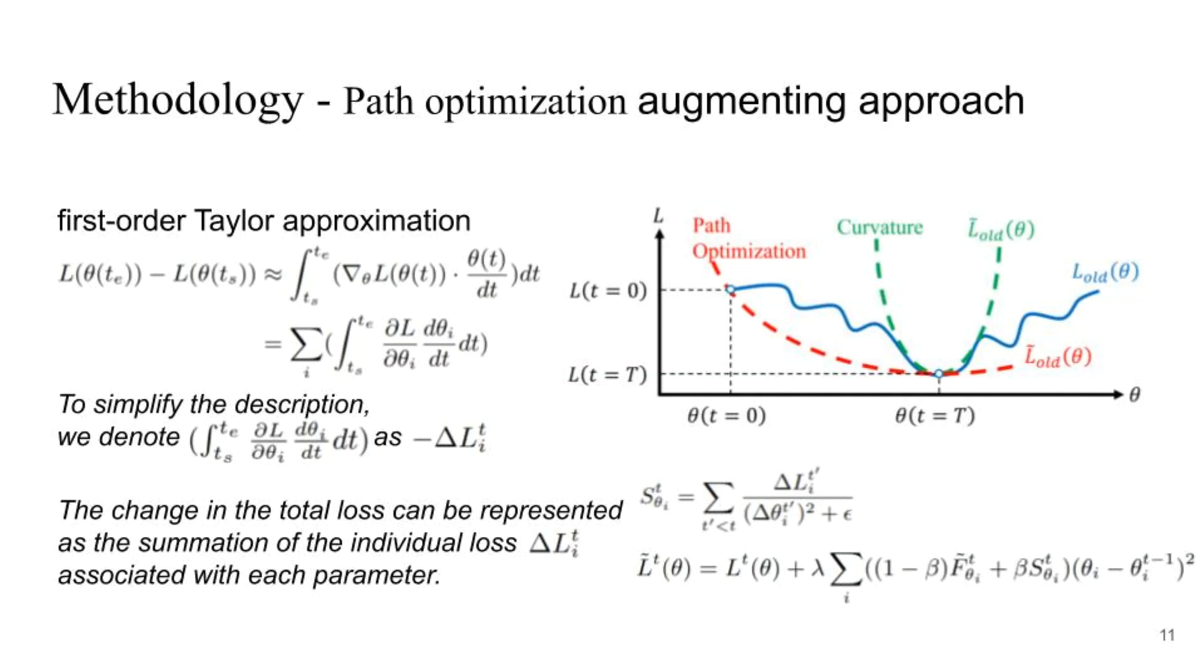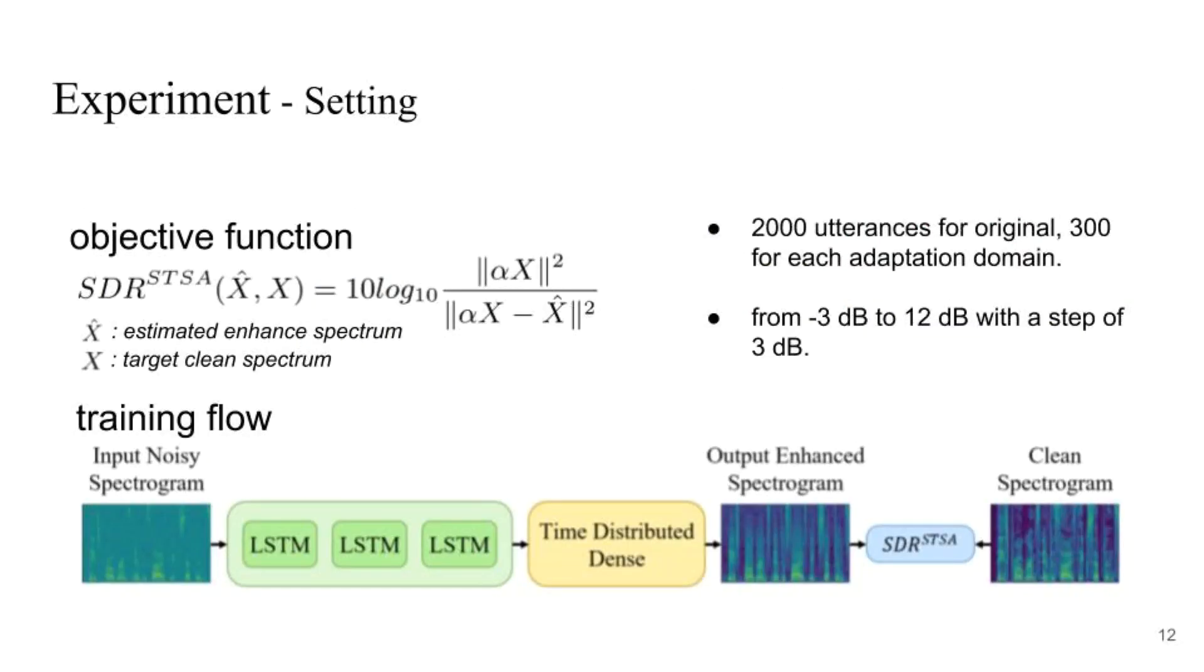Finally, we combine the advantages of curvature-based and path optimization-based approaches by interpolating the two strategies. In our experiments, we choose the scale-invariant speech distortion ratio in the spectrum as our objective function. We use one-directional LSTM for real-time inference.